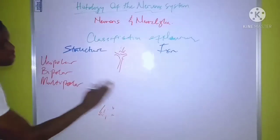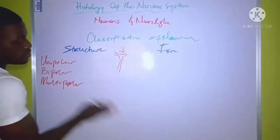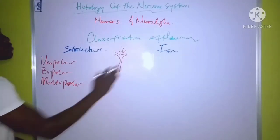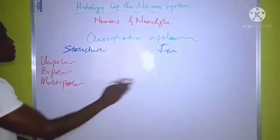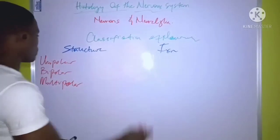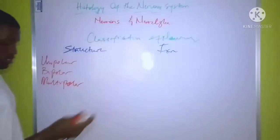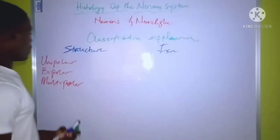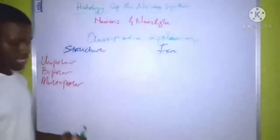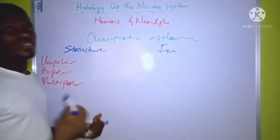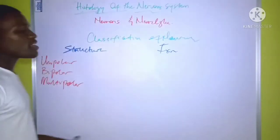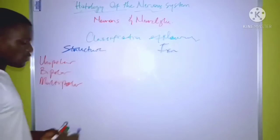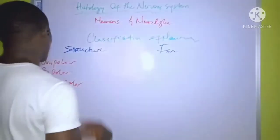The unipolar neurons are found mainly on the surface of the skin, and they are responsible for the sensation of heat, pain, pressure, and so on and so forth.